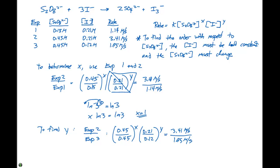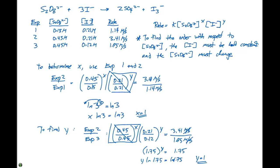Again, we have 0.45 over 0.45, so this term is going to be one, which we can ignore. We have 0.21 divided by 0.12, which gives us 1.75, so 1.75 to the Y power equals 3.41 divided by 1.95, which is also 1.75. That means Y times the ln of 1.75 equals the ln of 1.75, so Y is also equal to 1.